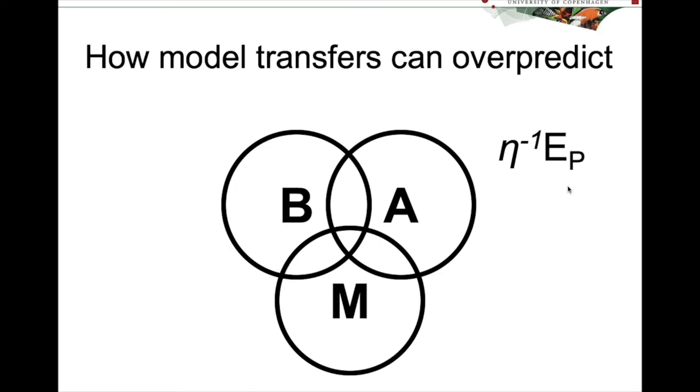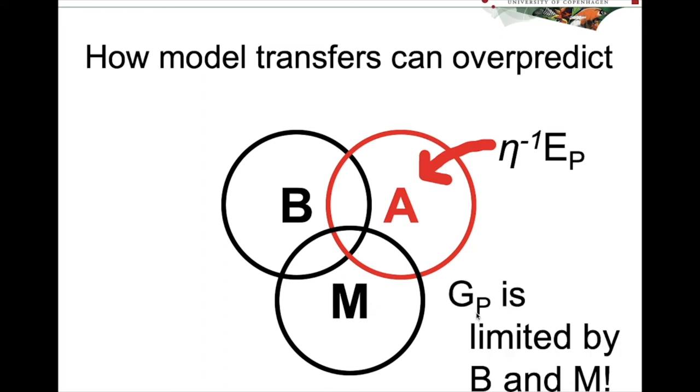What the inverse of EDA EP is, is only referring to suitable abiotic conditions. So you can already tell that this area is going to be limited by biotic conditions and a species ability to access those conditions, right? So GP is limited by B and M. And this is an important thing to remember when you're evaluating your model transfer, as you'll see throughout this section of the course.